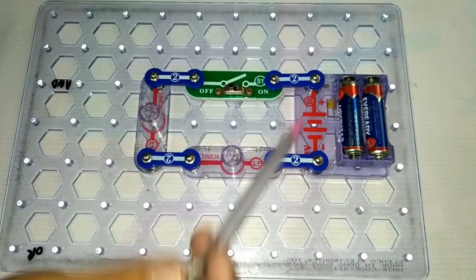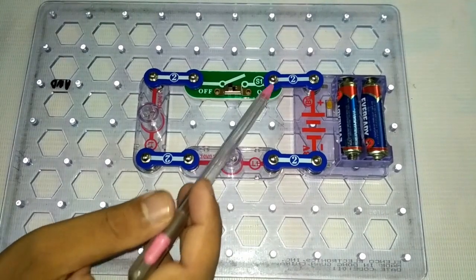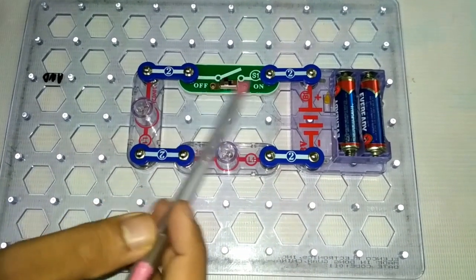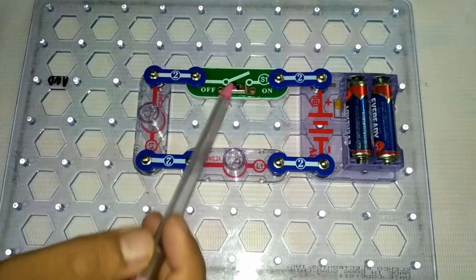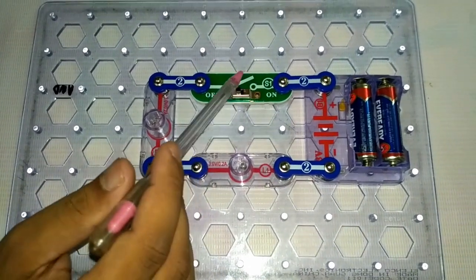And these are the snap wires, easy to connect with end-to-end connections. This is a switch, an on and off switch. This is the symbol of the switch.